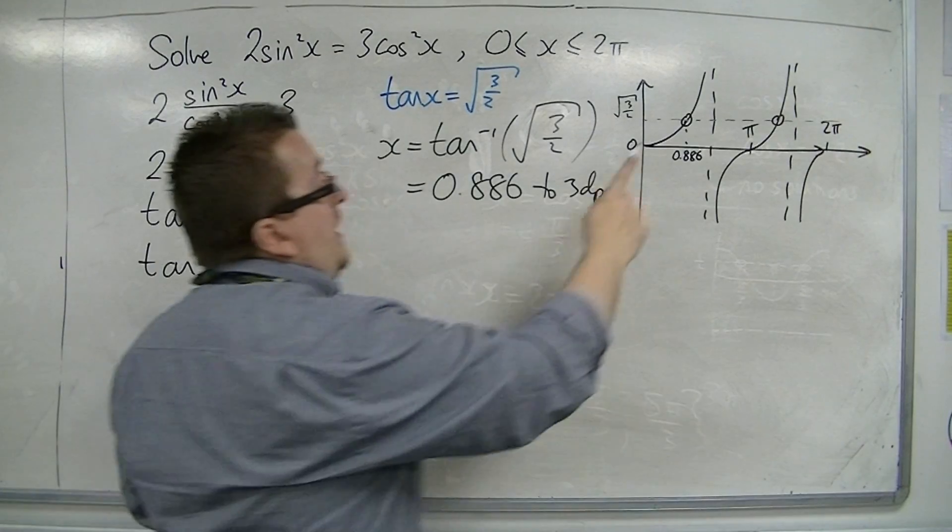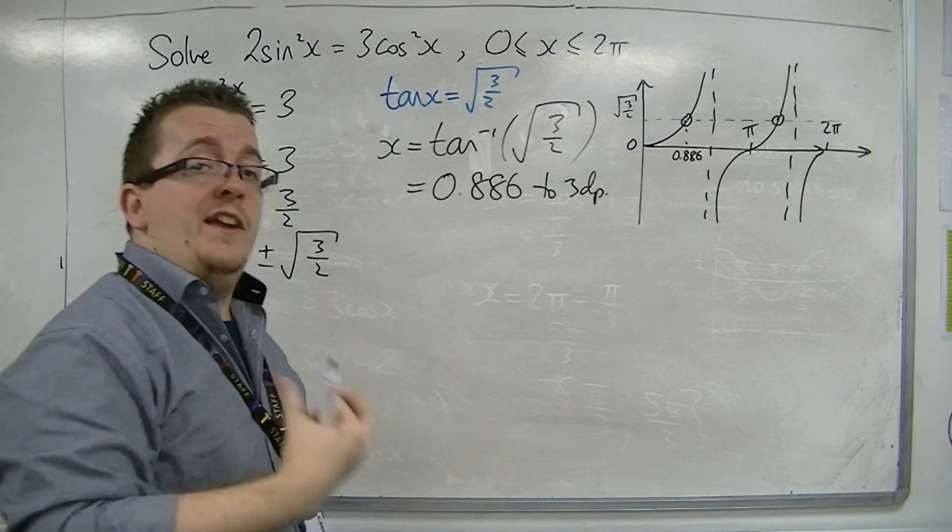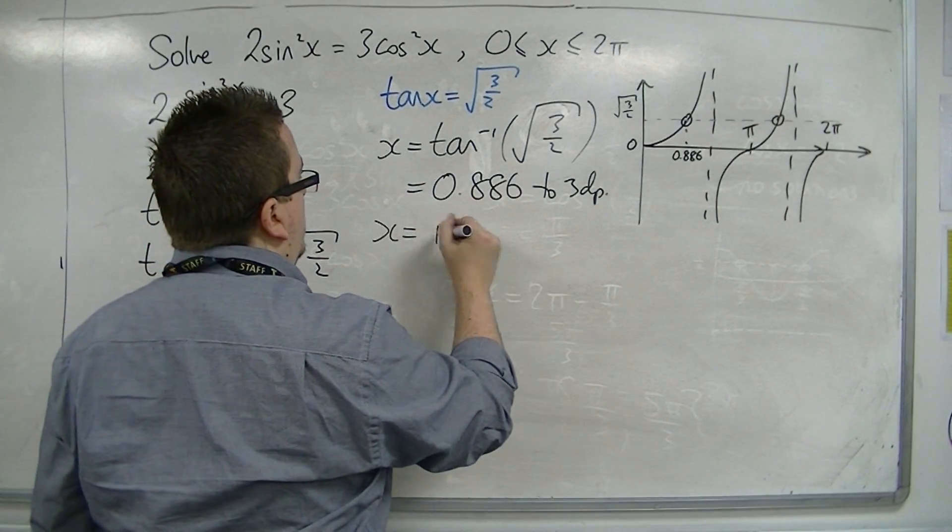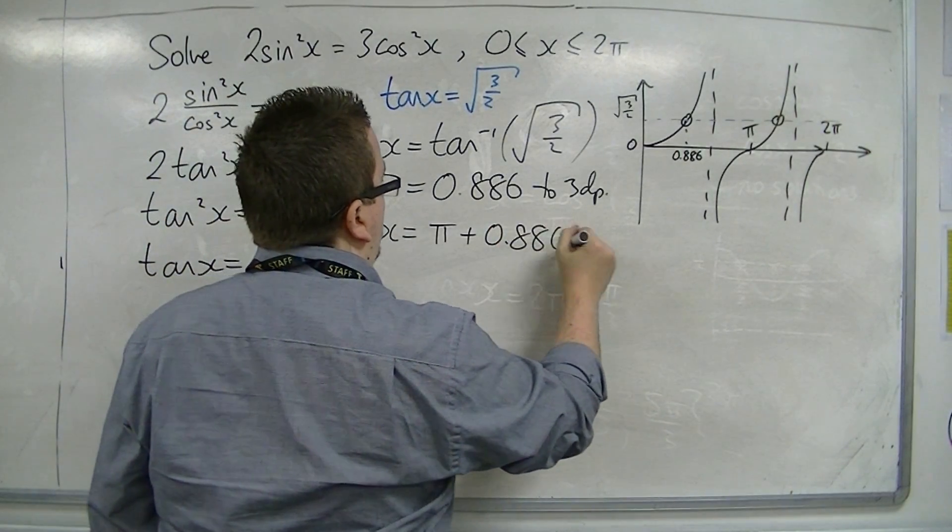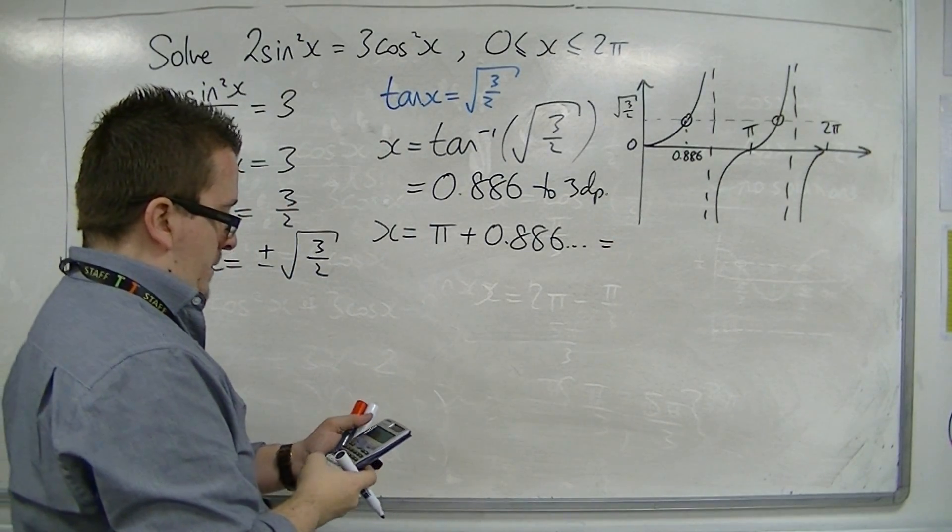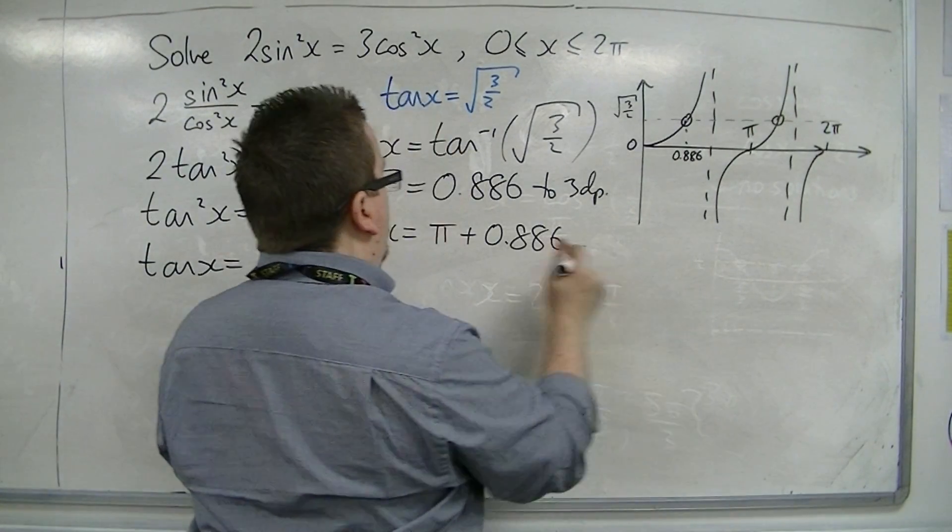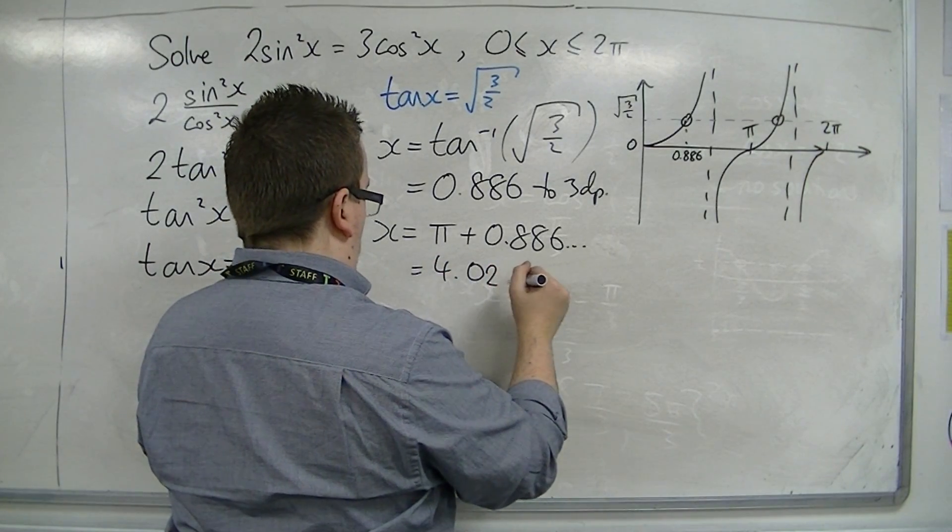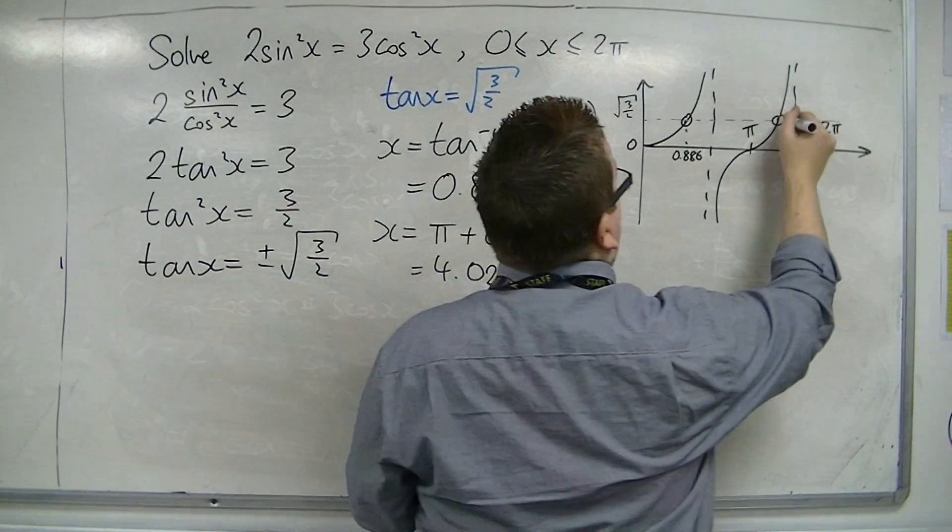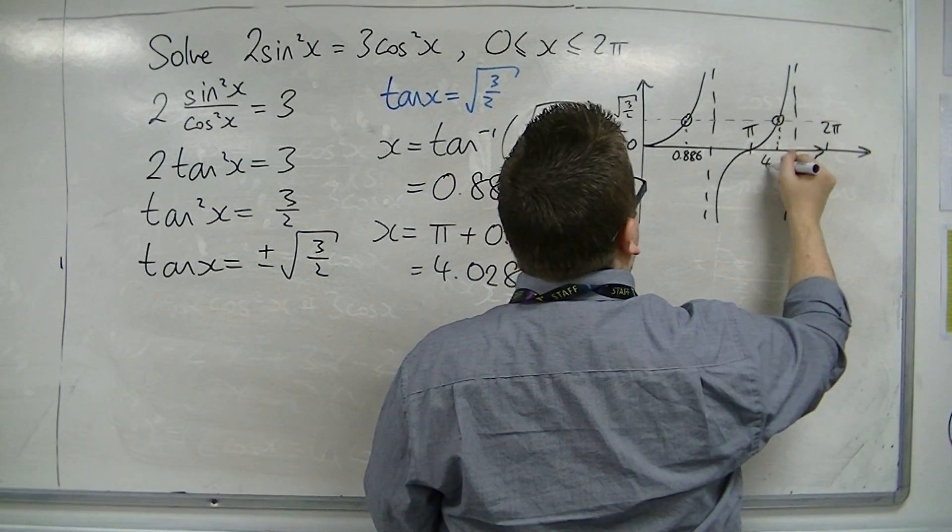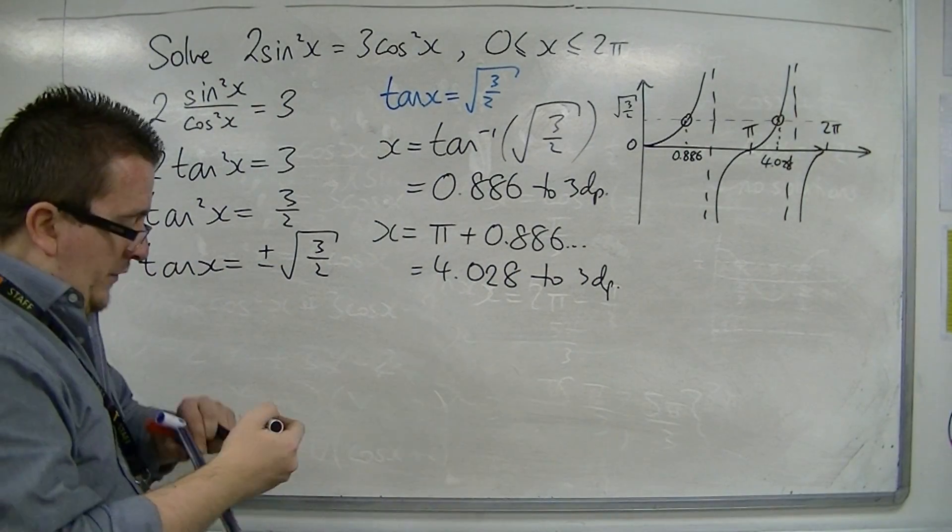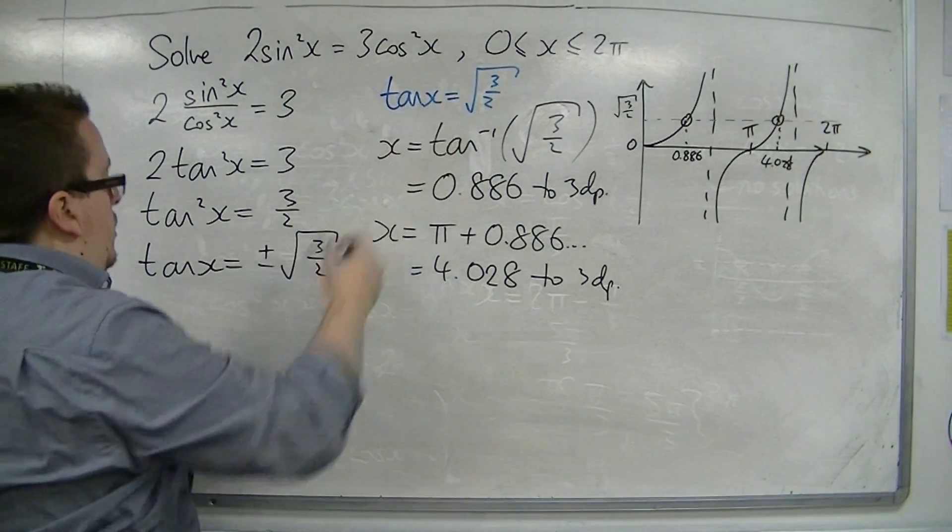In order to get the second solution, I'm going to add the period of tan, which is just pi. That's going to give me 4.028 to three decimal places. That's giving me the two solutions from that equation.